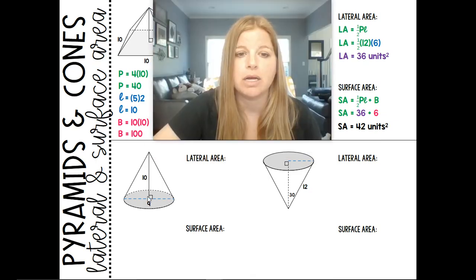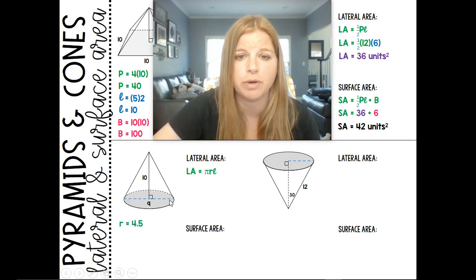All right, cones. Cone formula. Pi RL. So here I have this cone. I see the diameter is 9, so that means my radius is half of it, which is 4.5.